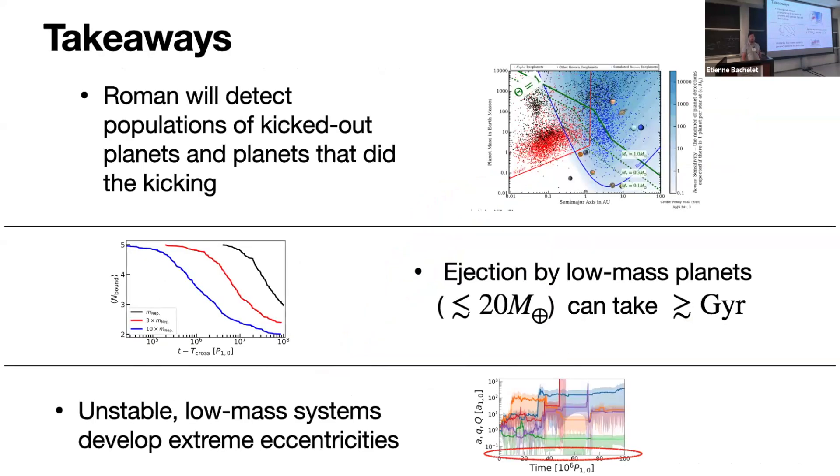Okay. So I'll just quickly conclude with some takeaways. So I think Roman is going to be great for both detecting the population of kicked-out free-floating planets and the planets that do the kicking. And, assuming, as it seems now, from both radial velocity and microlensing surveys, that higher mass planets are relatively rare, it's worth keeping in mind that ejections by low-mass systems can take over a billion years or more. And so there could be lots of apparently free-floating planets that are actually bound. And then thinking about the consequences of the fact that the scattering process can cause planets to develop very extreme eccentricities will be something to bear in mind. So thank you.